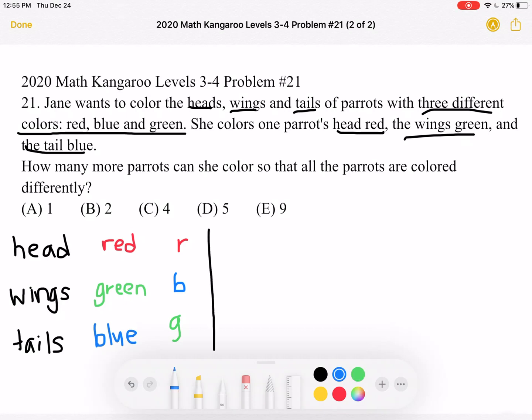Now let's do a blue head. We have a blue head, we can make the wings red, the tails green.